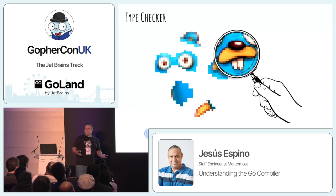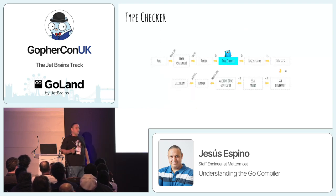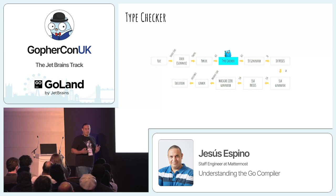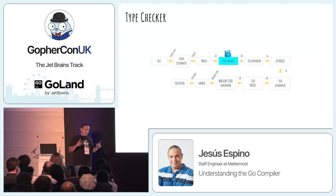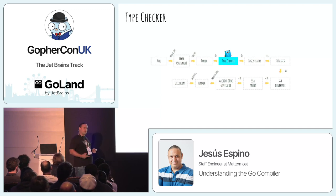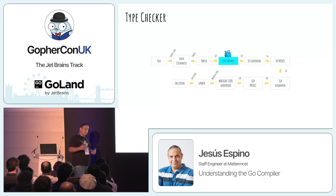Now we have our abstract syntax tree. The next thing is type checking. The type checker takes all the package-level objects — function declarations, constant declarations, type declarations — and first checks package-level types without including the bodies of the functions. In a second pass it checks the bodies, because you need that context to check types inside function bodies.